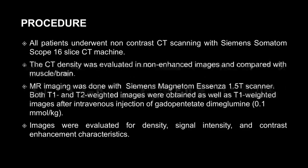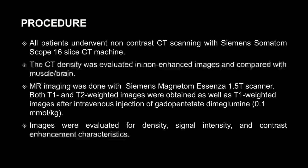All patients underwent non-contrast CT scanning with a Siemens Somatom Scope 16-slice CT machine. CT density was evaluated in non-enhanced images and compared with muscle or brain. MR imaging was done with a Siemens Magnetom Essenza 1.5 Tesla scanner. Both T1 and T2-weighted images were obtained, as well as T1-weighted images after IV injection of gadopentetate dimeglumine at a dose of 0.1 millimole per kg.